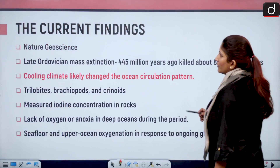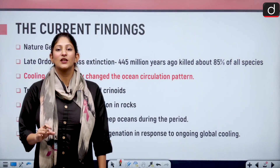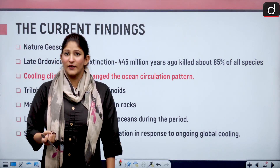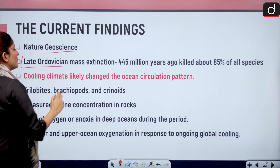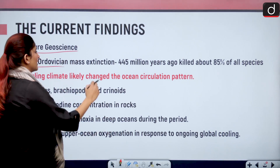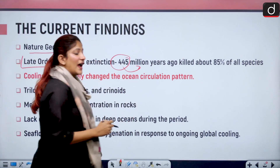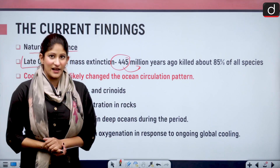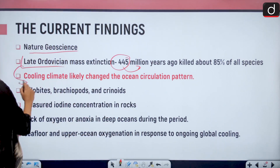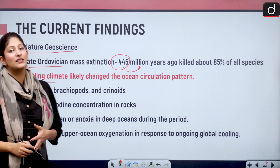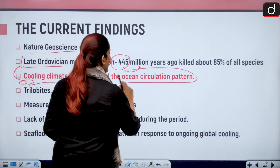The journal we have been studying, through which we have these recent findings, is by the name of Nature Geoscience. Here, the late Ordovician mass extinction occurred 455 million years ago and it took a toll on 85 percent of all species. One of the cited reasons is cooling climate, which changed the ocean circulation pattern.